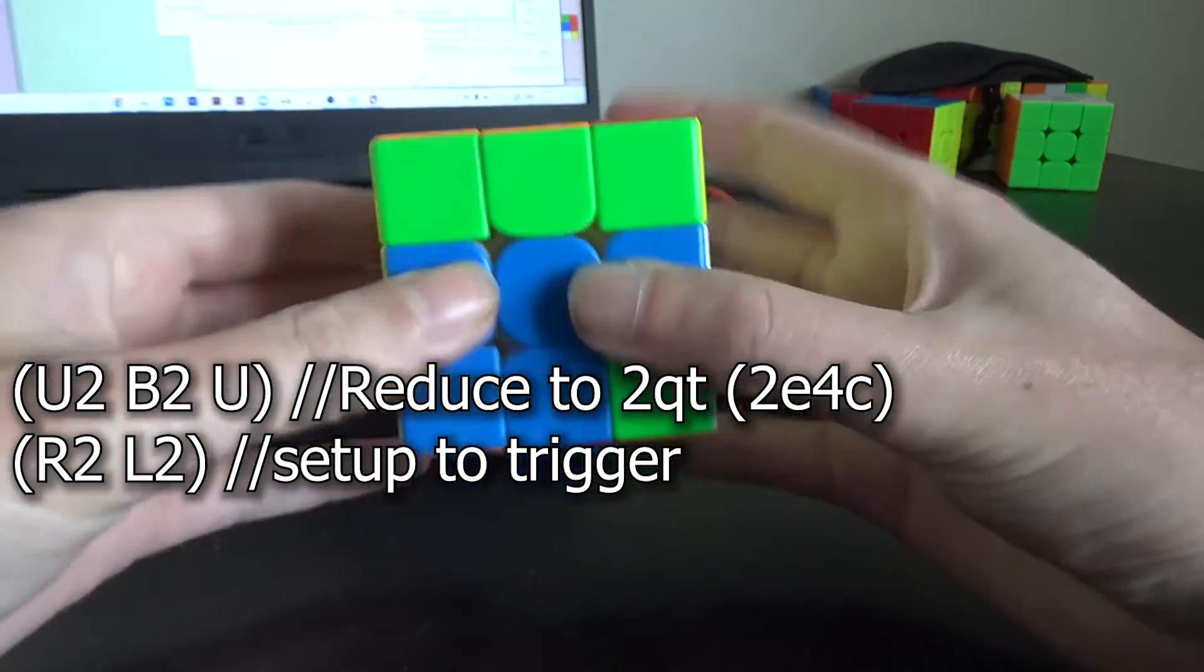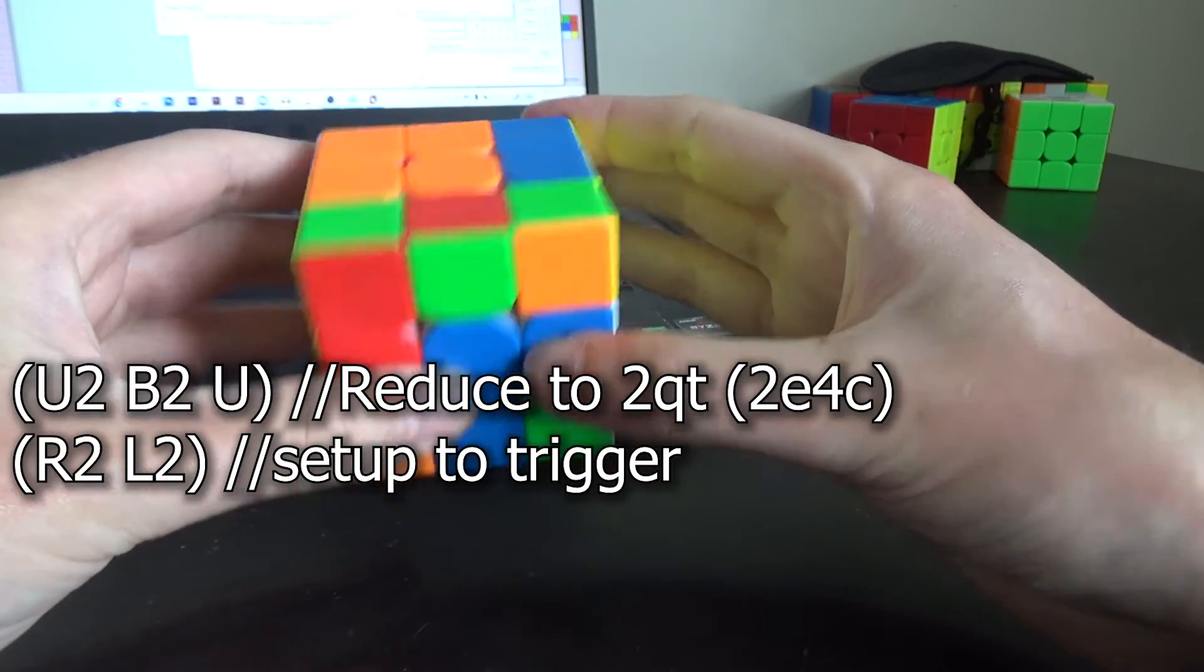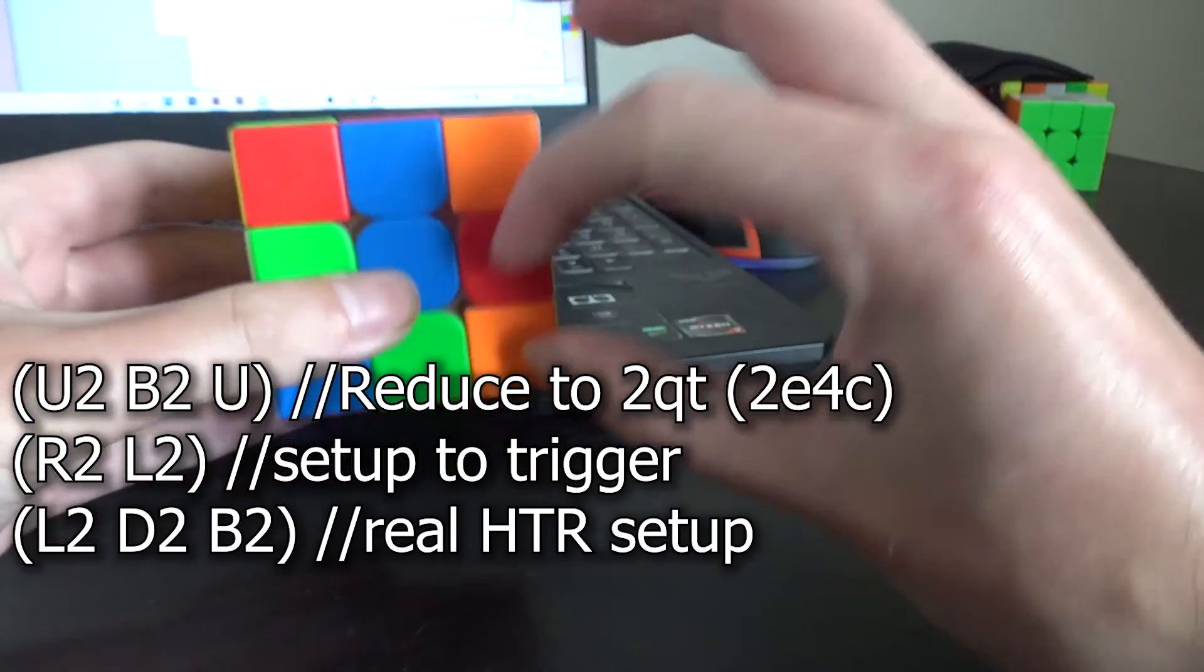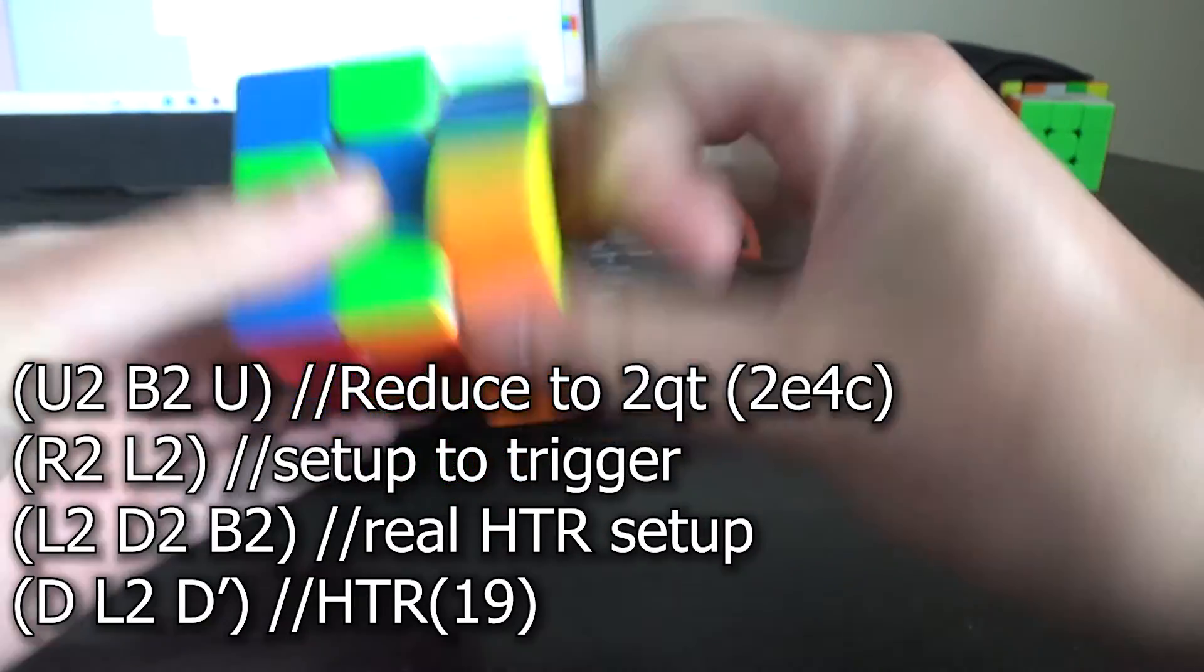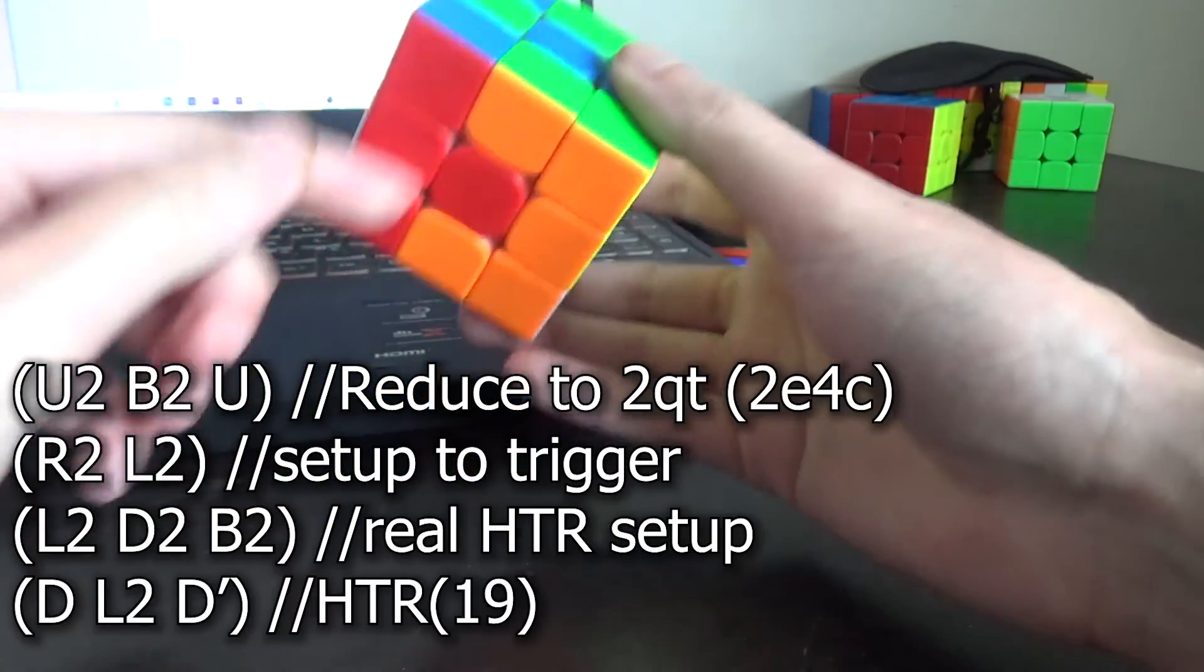So instead of doing this to get fake HTR, we do that trick from before where in this case it's L2 D2 B2, and now we get the trigger from this angle and we get real HTR because there's a bar here, there's a bar opposite.